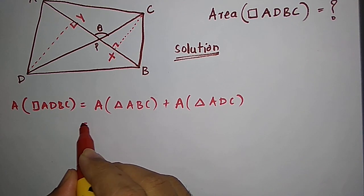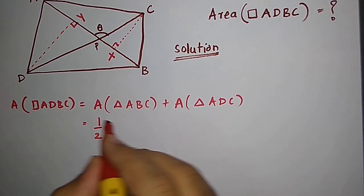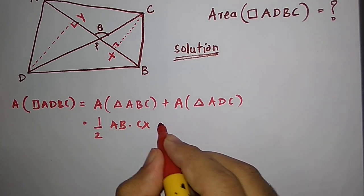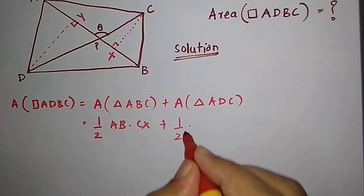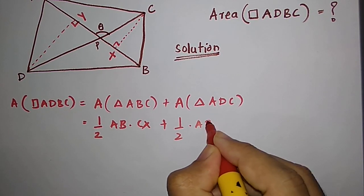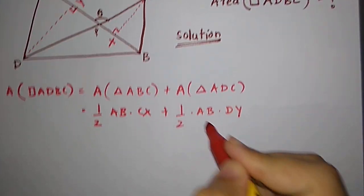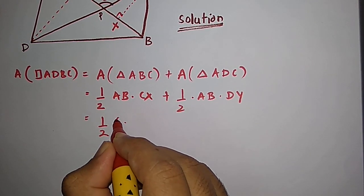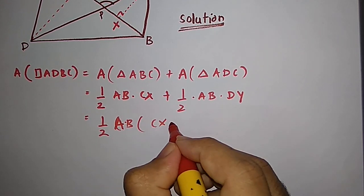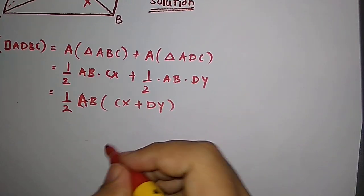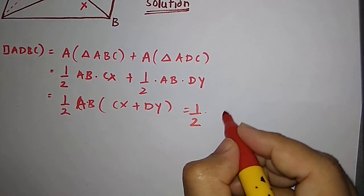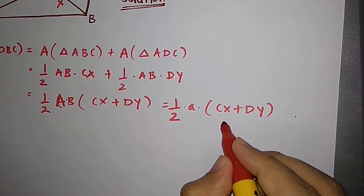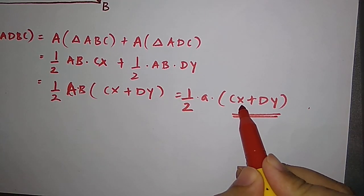The area of triangle ABC is half times AB times height CX, plus half times AB times height DY. Taking the common factor, we get half times AB times (CX plus DY). So we need to find out what CX plus DY is.